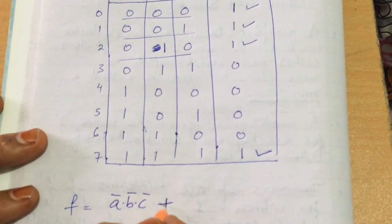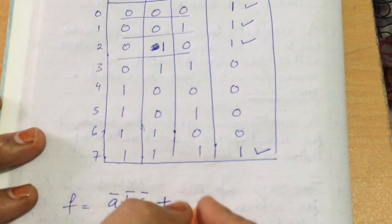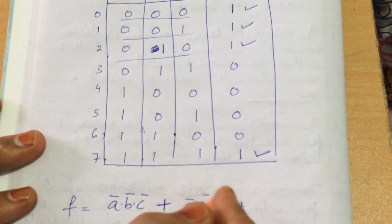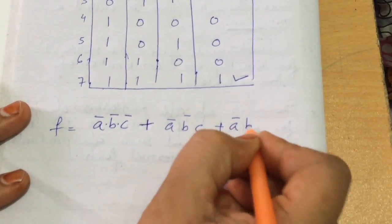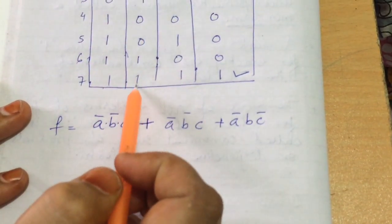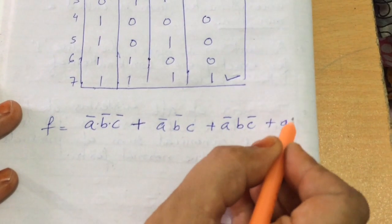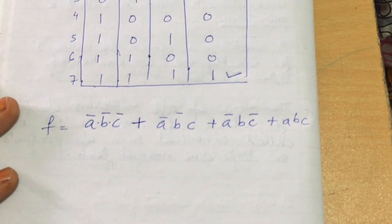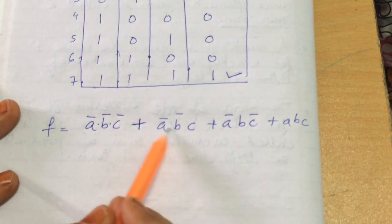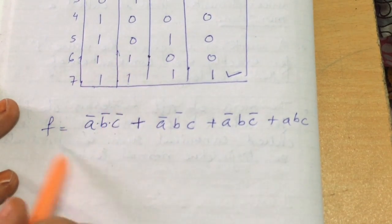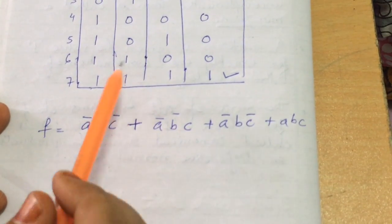We add all these terms using OR. For row 1 it is Ā B̄ C, for row 2 it is Ā B C̄, and for row 7 everything is 1 so it is A B C. We write each term in product form and then add all the terms together — this is known as canonical sum of products.